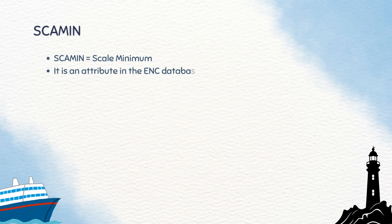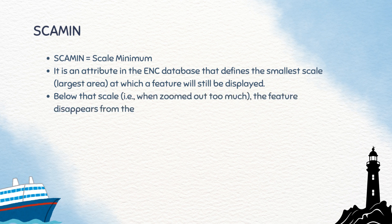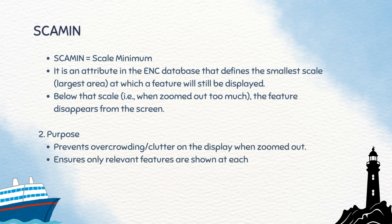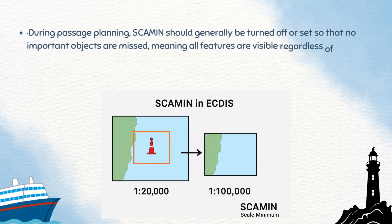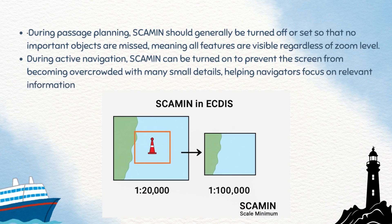SCAMIN, or scale minimum, defines the smallest scale at which a feature will still be displayed. If you zoom out too far, minor features disappear. The purpose of SCAMIN is to prevent overcrowding or clutter on the display when zoomed out, ensuring only relevant features are shown at each scale, making the chart display clearer and easier to interpret. During passage planning, SCAMIN should generally be turned off so that no important objects are missed, meaning all features are visible regardless of zoom level. During active navigation, SCAMIN can be turned on to prevent the screen from becoming overcrowded, helping navigators focus on relevant information.